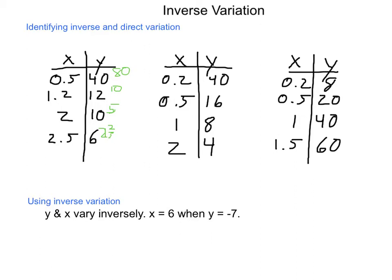Now, if we go for inverse variation, constantly multiplying them, we get 20, 14 and 4 tenths, 20, and 15. So, since the products are not constant, nor are the quotients constant, we have to conclude that this is neither form of variation.